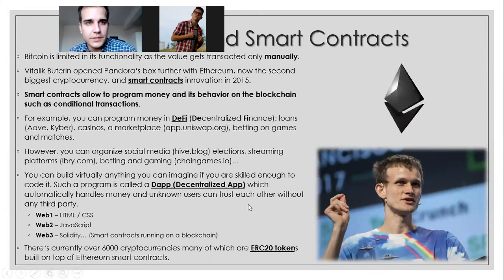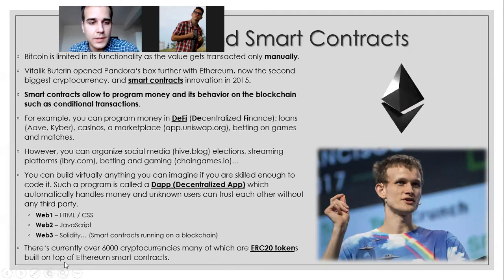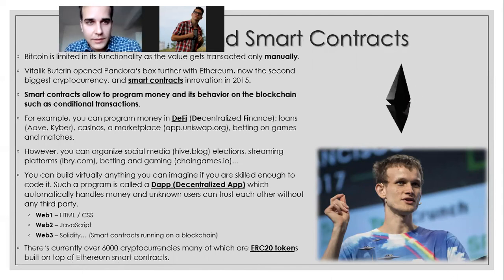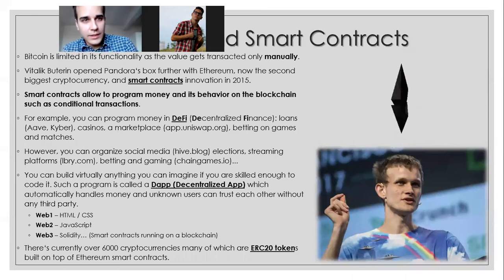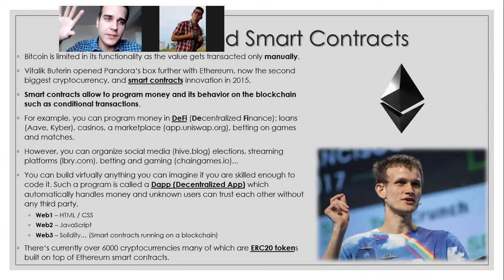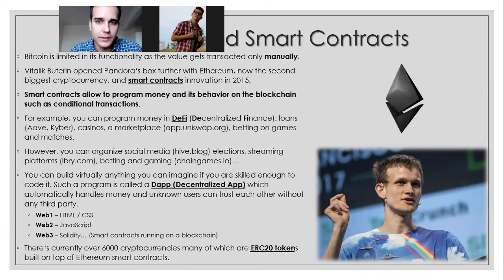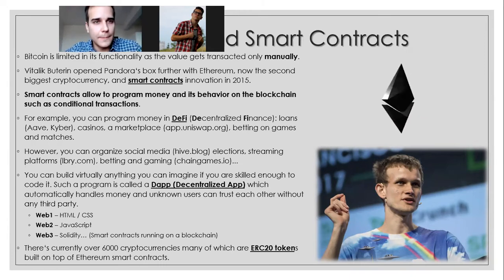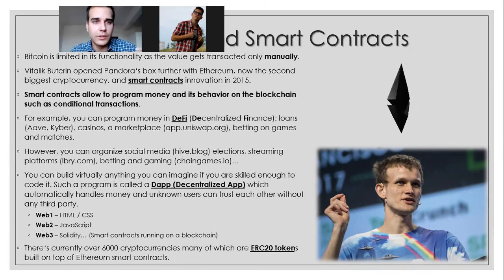There are currently over 6,000 cryptocurrencies, many of which are ERC-20 tokens built on top of Ethereum smart contracts. So when you have the smart contract of Ethereum, you can create a new kind of cryptocurrency called a token, but it is running on the Ethereum blockchain. As I showed you with Chain Games — there is a native token called Chain, but it basically runs on Ethereum anyway.